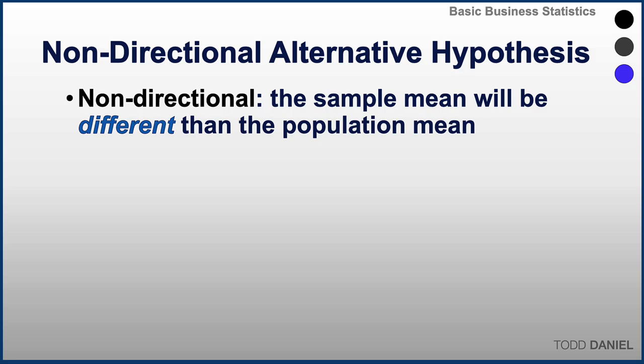We also have the option of doing a two-tailed test. In fact, this is the type of alternative test that we will use the most. A two-tailed test is a non-directional alternative hypothesis. It specifies that the sample mean will be different than the population mean, but does not specify a direction of change.